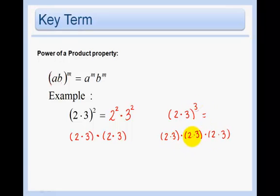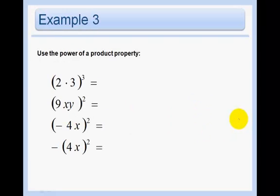In other words, I would have had 2 times 2 times 2, 2 cubed, times 3 times 3 times 3, 3 cubed. And that's the same power property that I'm talking about. 2 to the 3rd times 3 to the 3rd. So let's just do some sample problems.